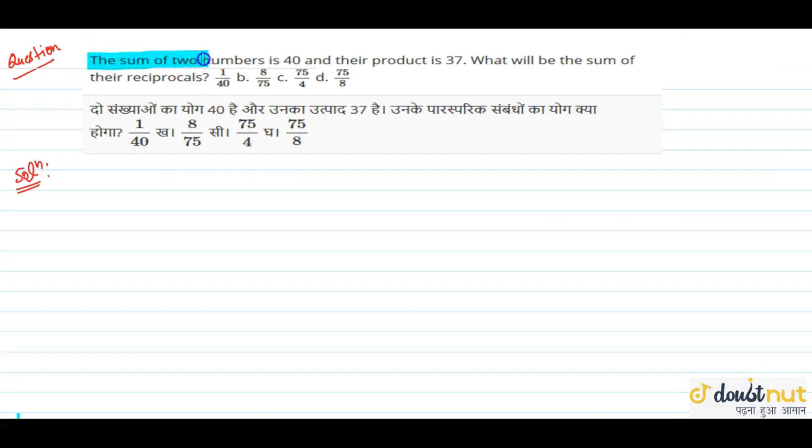The sum of two numbers is 40 and their product is 37. What will be the sum of their reciprocal?